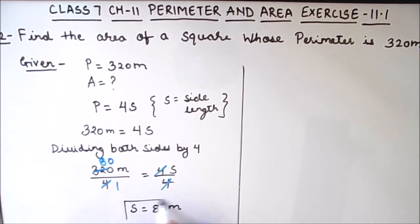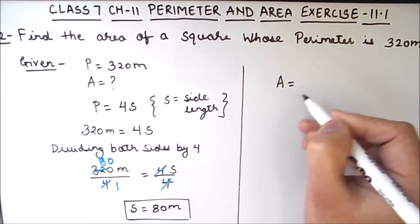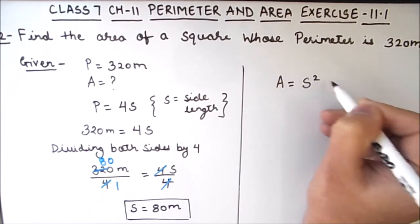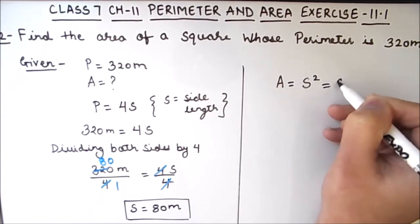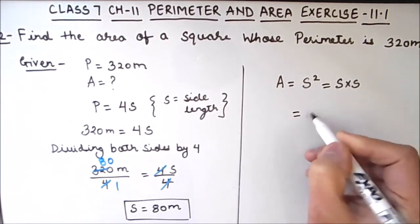This is the value of s which we need for finding the area of square. Now we will use the formula for finding the area of square which is s square or side times side. Here the value of s is 80 meters.